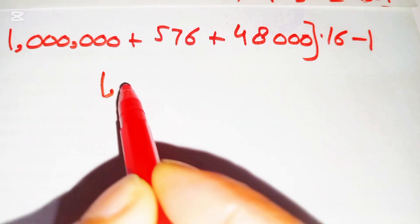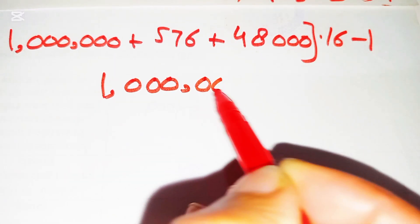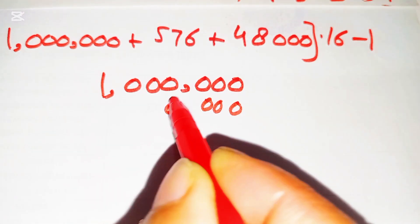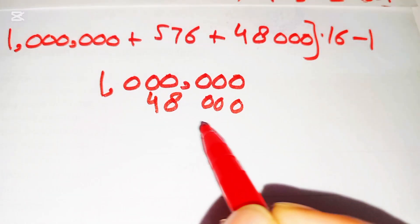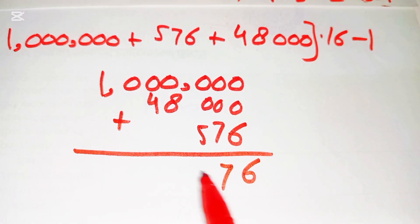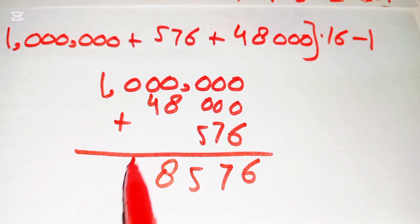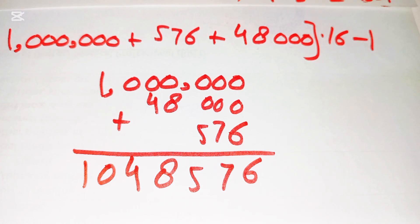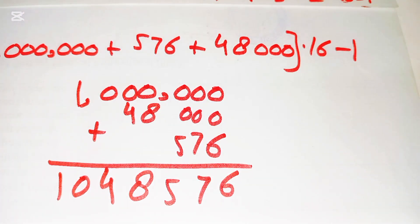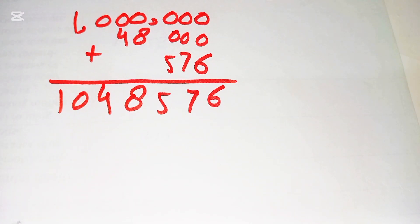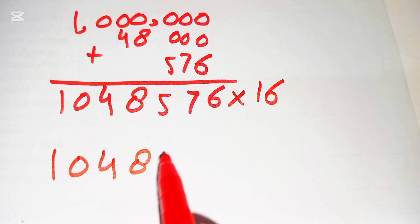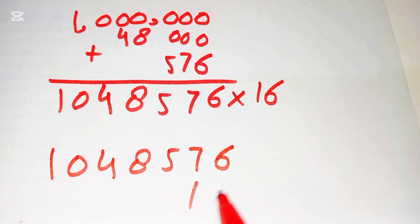We add them: 1,000,000 plus 48,000 plus 576 equals 1,048,576. Then we multiply this by 16, carrying through the arithmetic to get 16,777,216.